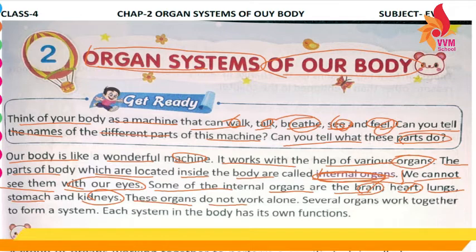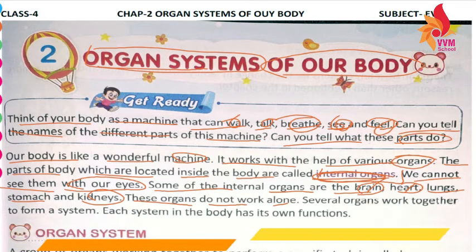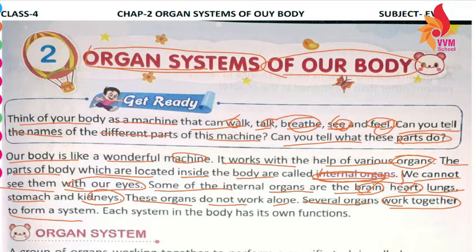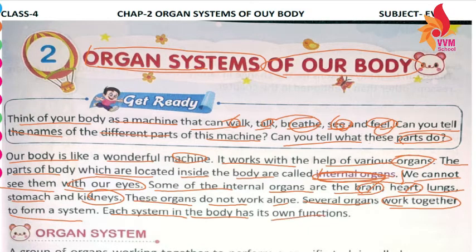These organs do not work alone — they work together to form a system. All organs come together and what is called? A system. Single organs alone cannot be called a system, but all organs together make an organ system. The activities of your body are complete through these systems. Each system in the body has its own function.